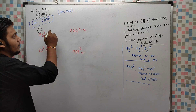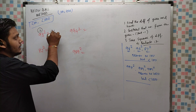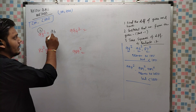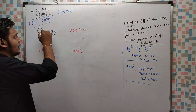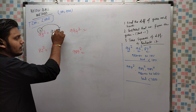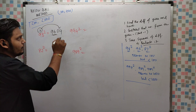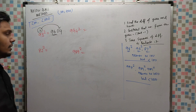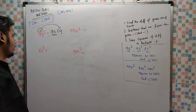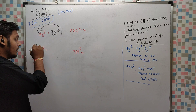For 98²: 98 minus 2 is 96, and 2² is 4 — but base is 100 so we keep 2 digits: 04. The answer is 9604.